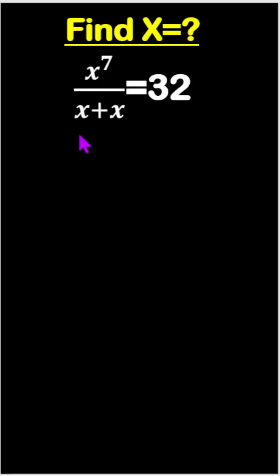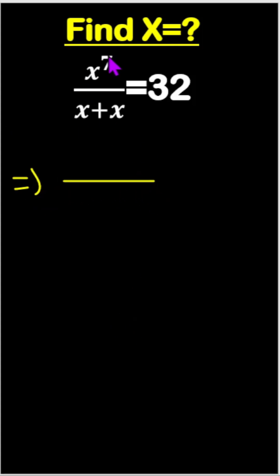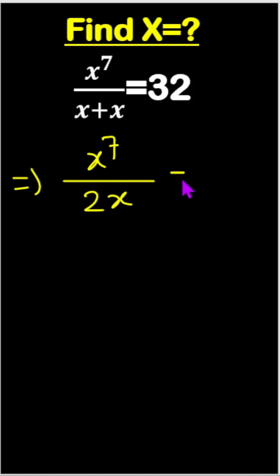x to the power 7, divide x plus x, equals 32. Very simple, but sometimes we make mistakes. Simple matter. So easily we can write x to the power 7 — x plus x means 2x — equals 32. We can multiply both sides by 2.